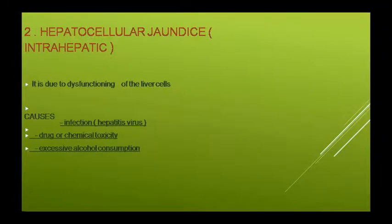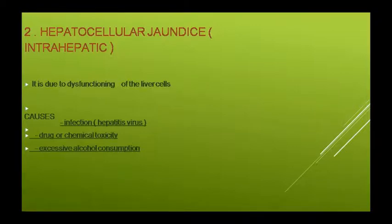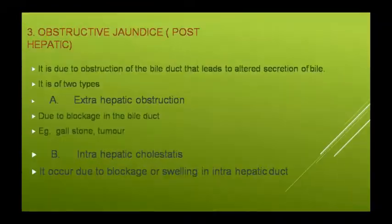Hepatocellular jaundice या intrahepatic jaundice, liver cells के dysfunction की वजह से हो सकता है। यह hepatitis virus के infection से हो जाता है, किसी drug या chemical की toxicity से हो सकता है, या जो लोग बहुत ज़्यादा alcohol का consumption करते हैं उनमें ऐसा देखा जाता है।